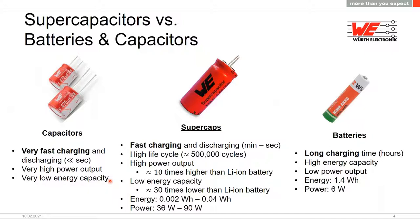What makes supercapacitors 'super'? The charging and discharging possibilities are unique — you can charge and discharge them very fast, and we have a long life cycle of around 500,000 cycles. The power output is around 10 times higher than a lithium-ion battery. But there are also limitations: low energy capacity — around 30 times lower — and a linear voltage dependency when drawing energy. Compared to traditional capacitors, the power output is much bigger, but rated voltage availability is higher for traditional capacitors.